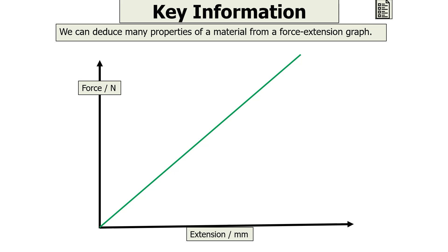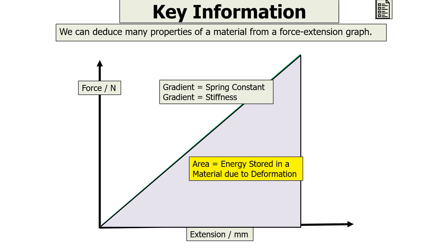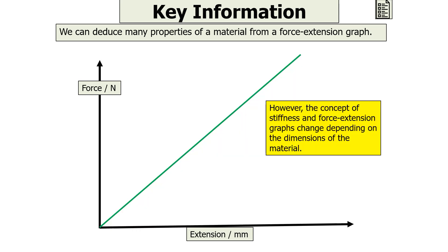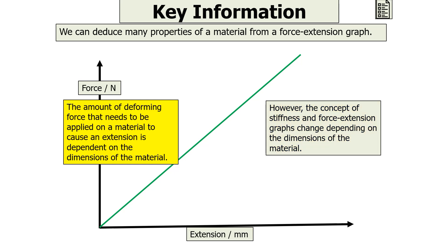We can introduce many properties of a material from a force-extension graph. The gradient of a force-extension graph is the spring constant, sometimes called the stiffness, whilst the area under the straight-line section is the energy stored in a material due to deformation. However, the concept of stiffness from a force-extension graph can change depending on the dimensions of the material, because the amount of deforming force needed to cause an extension is dependent on those dimensions.